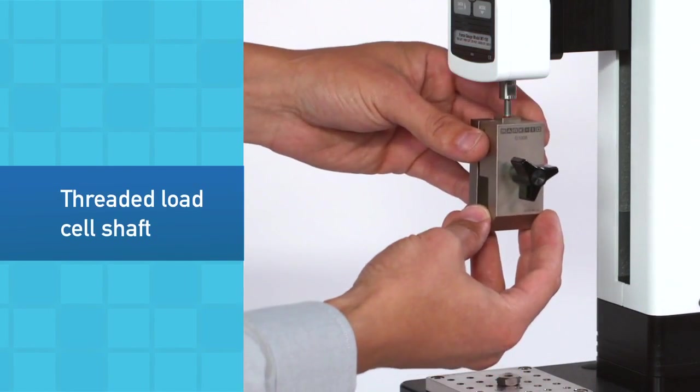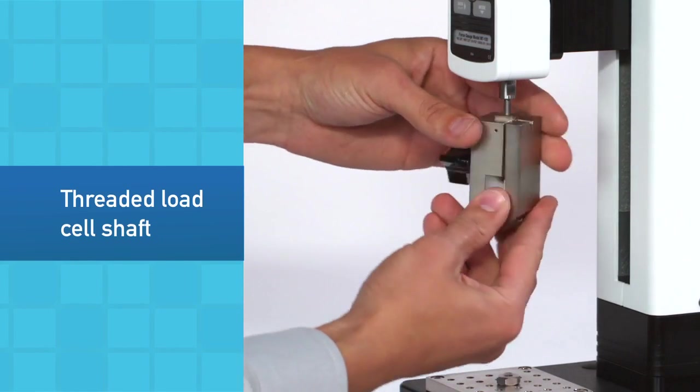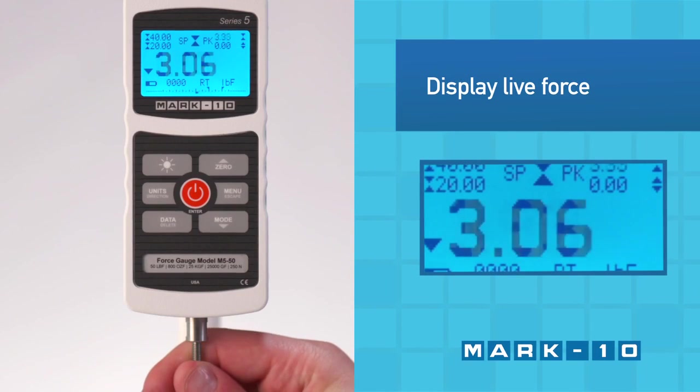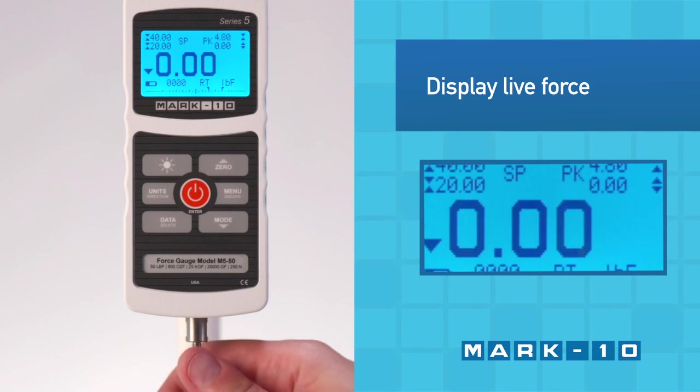The threaded load cell shaft is used to attach grips and attachments. Push and pull on the shaft to display the live compression or tension force in real-time mode.